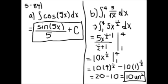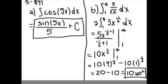Then you take the antiderivative of 5x to the negative 1 half, which is 5x to the negative 1 half plus 1 over negative 1 half plus 1 with boundaries of 1 to 4. This simplifies to 10x to the 1 half with boundaries of 1 to 4.